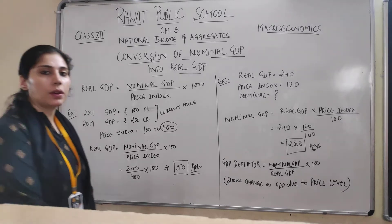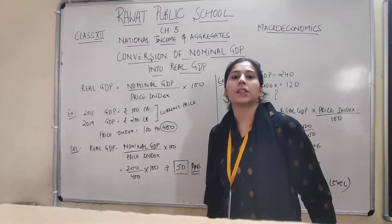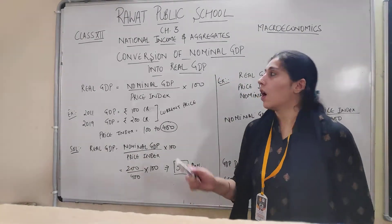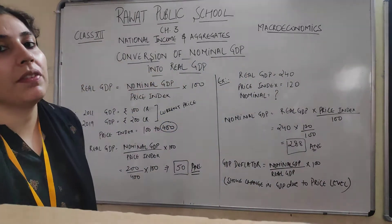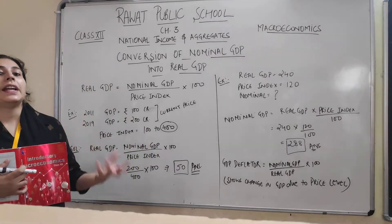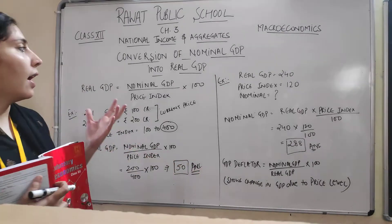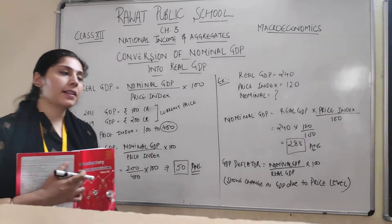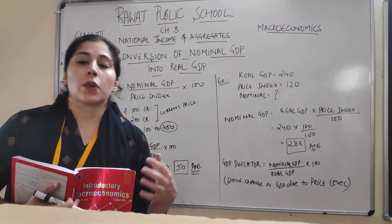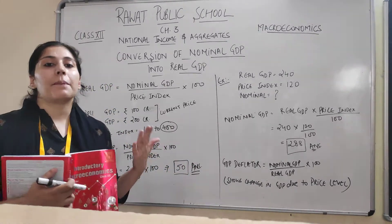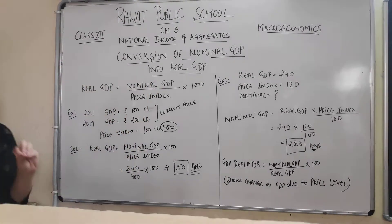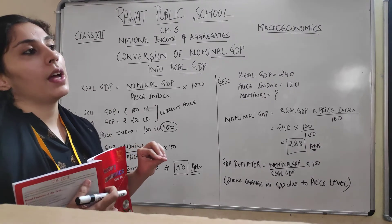Good morning students, welcome to the cloud session. Today we are going to conduct a numerical class on Chapter 3 of National Income — nominal GDP and real GDP. We have discussed this in our earlier class. GDP gives us the indicator of growth. Nominal GDP is calculated on the basis of current year prices, and real GDP is calculated on the basis of base year prices. Real GDP is the better indicator of growth because it focuses on the growth of quantity and not on the change in prices.